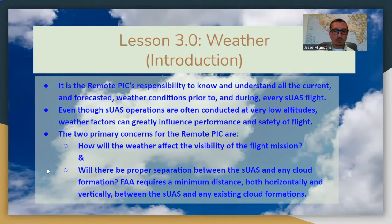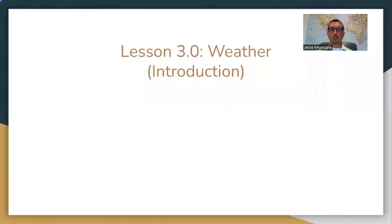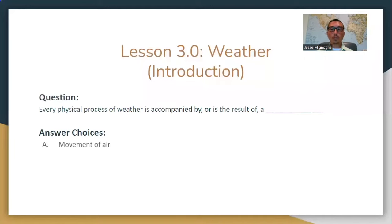Key things for the PIC to know: how will weather affect visibility on the flight mission, and will there be proper separation between the SUAS and clouds? The FAA requires a minimum distance both horizontally and vertically between your unmanned aerial system and the clouds — 500 feet below the clouds at minimum, and 2,000 feet horizontally away. You are responsible to know how high the clouds are, because the FAA doesn't want an airplane flying through clouds to come through and run into your UA.